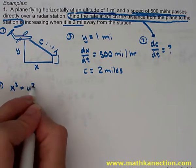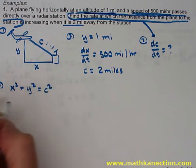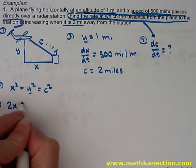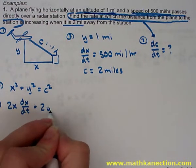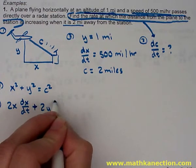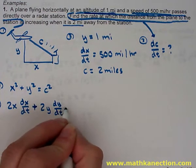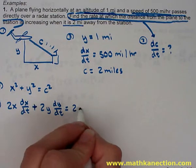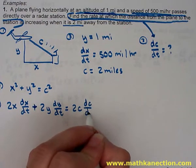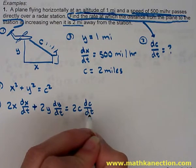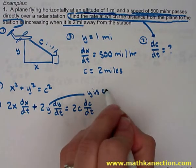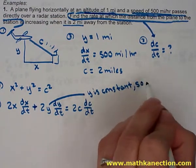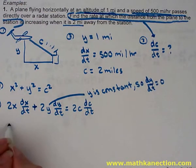Next up, write an equation. x squared plus y squared is equal to c squared. Step five is to derive, so 2x dx/dt plus 2y dy/dt is equal to 2c dc/dt, differentiating with respect to time every variable. Well, the airplane is going to stay at an altitude of one mile, so since y is going to be constant, the derivative of y with respect to time is going to be zero.